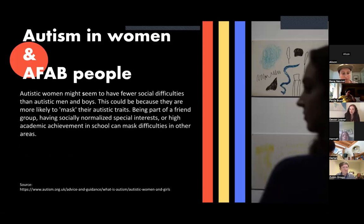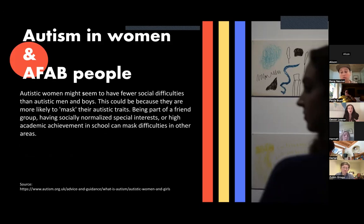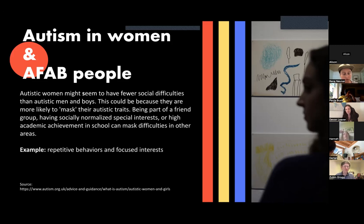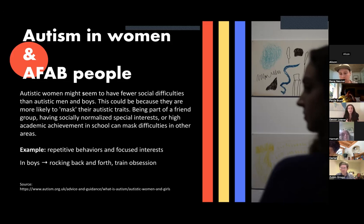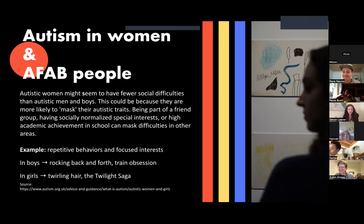Autistic women might seem to have fewer social difficulties than autistic men and boys, and this could be because they are more likely to mask their autistic traits — that's definitely how I've gone about my life. Being part of a friend group, having socially normalized special interests, or high academic achievement in school are all factors that can mask difficulties in other areas. A common manifestation of ASD would be repetitive behaviors or hyper-focused interests. In boys, this might be rocking back and forth or an obsession with trains, whereas in girls it might be twirling hair or something like the Twilight Saga — which was normalized for me since one of my special interests is pop culture, media, and cinema.